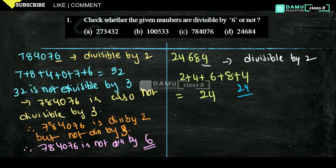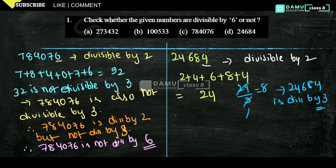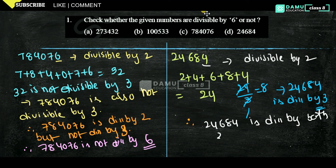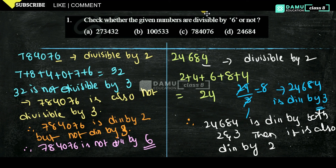Is 24 divisible by 3? Yes, 24 ÷ 3 = 8. So 24684 is divisible by 3. Therefore 24684 is divisible by both 2 and 3, and so it is also divisible by 6.